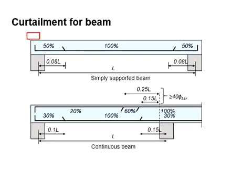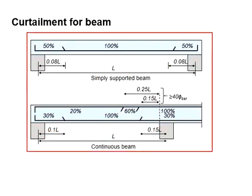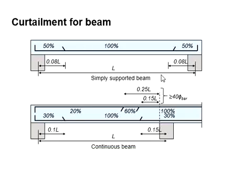This diagram shows the typical curtailment of a simply supported beam and a continuous beam. The reinforcement bar is provided at 100% at the mid-span and the amount of reinforcement bar can reduce by 50% within the span of 0.08L from the center of the support.